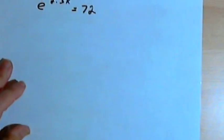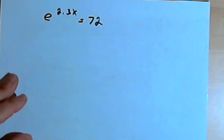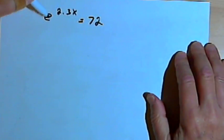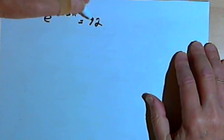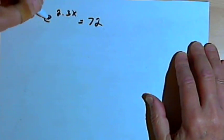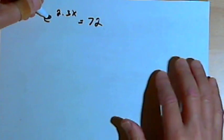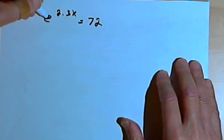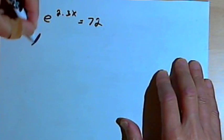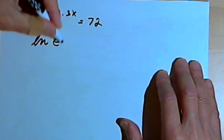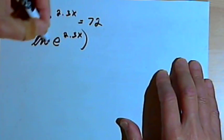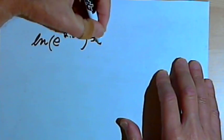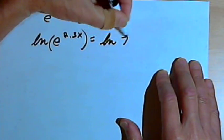Let's try one more. This is basically the same thing, except I'm working with an e. So I've got e raised to the 2.3x equals 72. I want to take the logarithms of both sides. When I've got an e, the smart thing to do is take the natural log. So I'm going to have ln of e raised to the 2.3x equals the natural log of 72.